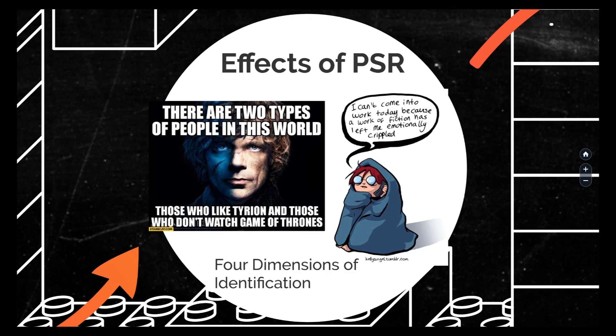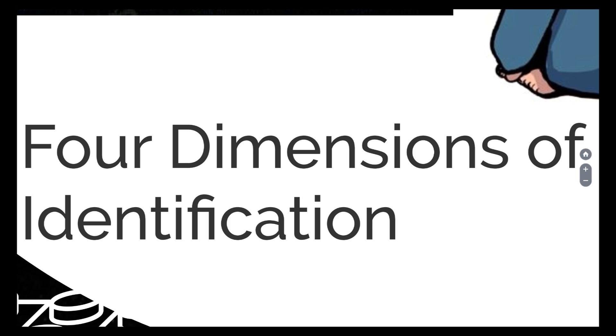There are four dimensions of identification that are involved in parasocial relationships. First is empathy for the character. And you feel happy or sad with the character, not just for the character. That's an important distinction. So if the main character finally gets the girl of his dreams, you also feel like you got her too, not just for him. The second is a cognitive aspect with the character, meaning you believe you understand where the character's coming from and their motivations.